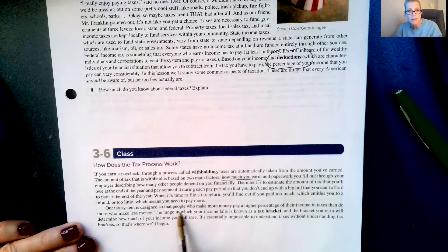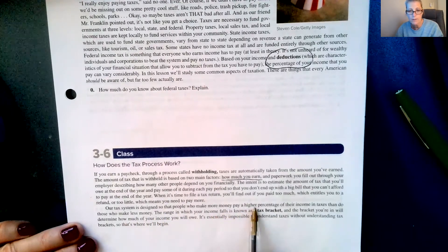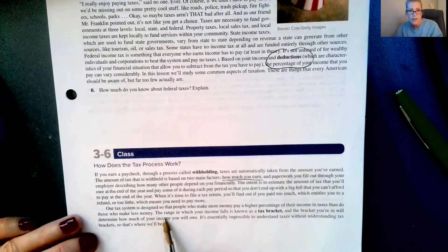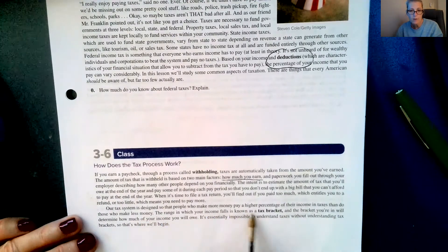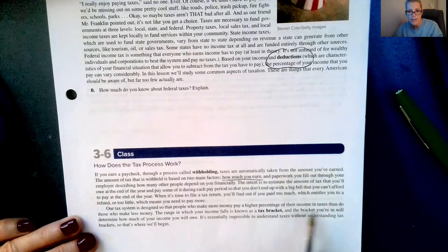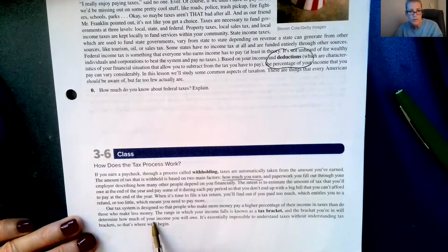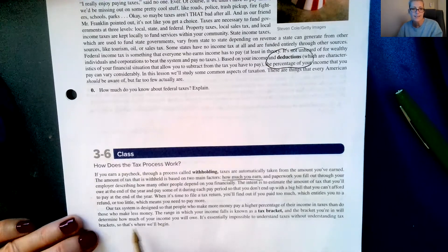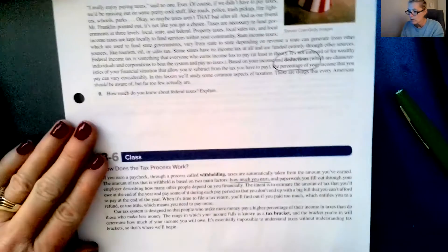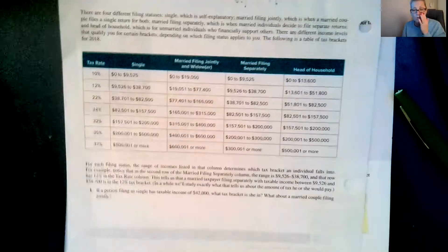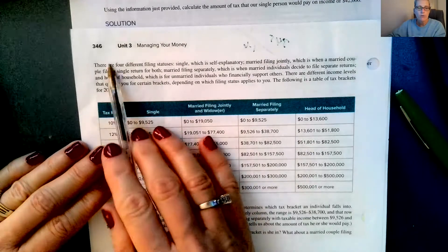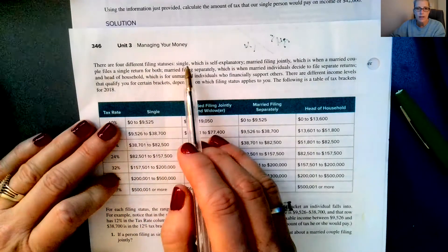Our tax system is designed so that people who make more money pay a higher percentage of their income in taxes than do those who make less money. The range in which your income falls is known as a tax bracket, and the bracket you're in will determine how much of your income you will owe. It's essentially impossible to understand taxes without understanding tax brackets, so that's where we're going to start. And they do kind of change from year to year.